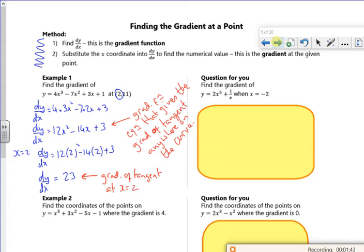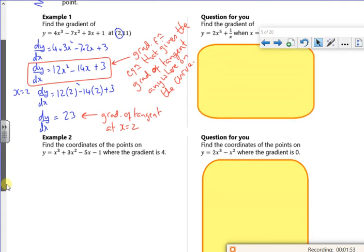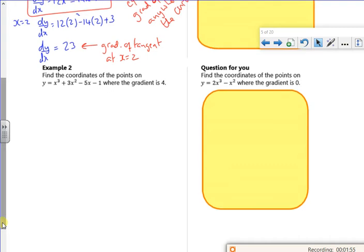x equals 2. So x equals 2. If I subbed 10 into that equation, it would give me the gradient of a tangent at x equals 2. It's quite good to get the gradient of a tangent. Let's have a look at this one. So this one's going backwards.